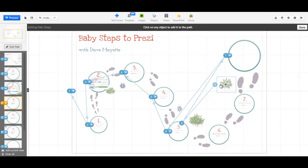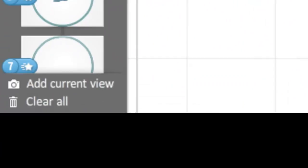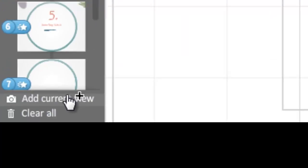So that is the first way. Along with this, I can also click Add Current View, which will just take a picture of whatever is on my screen here and add that to the end of the path.